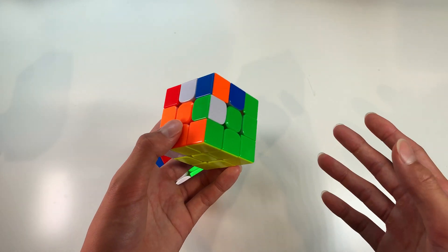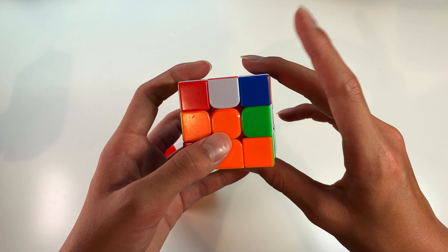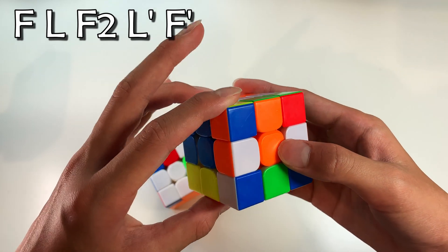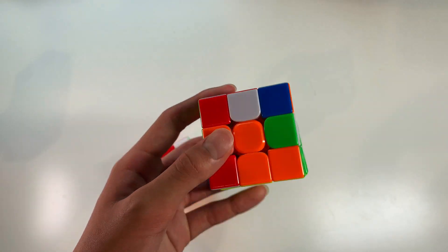So this is basically the mirror case and you will be solving the pair on the right. So you can do the same thing just with your left hand, F, L, F2, L' that will pair them up and you can just do a F'. But if you don't like doing L moves, here's another way of looking at it.